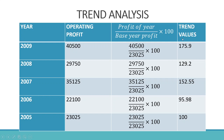Looking at the trend values: starting from 2005 at 100, in 2006 it decreased to 95.98, then in 2007 it increased to 152.55, followed by a decrease in 2008, and in 2009 the profit percentage is 175.9%. When we compare 2009 with 2005, we can see an increase in the operating profit of 75.9% — it was 100 and has become 175.9. So, over a period of time, whether there is a proportionate increase or decrease can be easily found using trend analysis.